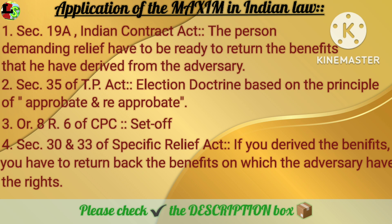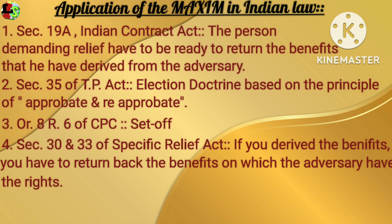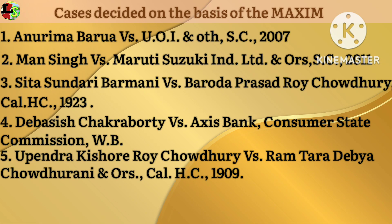Fourth, Sections 30 and 33 of the Specific Relief Act — these two sections are based on this very maxim: if one takes a benefit, one will have to return the benefit to the adversary on which the opposite party or adversary has the right. On cancelling an agreement for sale, the vendor has to return the earnest money that he had received from the intending purchaser. It is thus an enforceable conviction in the rule of law.